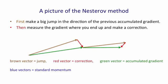Now if you compare that with the standard momentum method, the standard momentum method starts with an accumulated gradient that's like that initial brown vector, but then it measures the gradient where it is. So it measures the gradient at its current location and it adds that to the brown vector so that it makes a jump like this big blue vector. That's just the brown vector plus the current gradient.